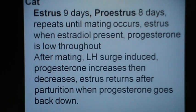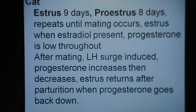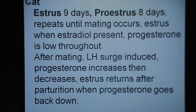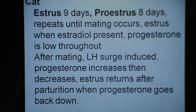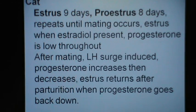In the cat, the estrus average is 9 days. The proestrus is 8 days and repeats until mating occurs because it is an induced ovulator animal. Estrus occurs when estradiol is present; progesterone is low throughout. After mating, an LH surge is induced and progesterone increases then decreases. Estrus returns after parturition when progesterone goes down. In the unmated cat, the inter-estrus interval is very short.